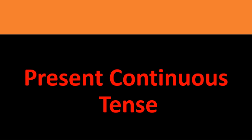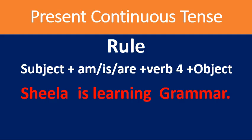Now I take you to present continuous tense. The present continuous tense is used for an action which is happening at present, right now. The rule is: subject + am/is/are (depending on the subject) + fourth form of verb (verb + ing) + object. For example: 'I am,' 'he is,' 'Raju is,' 'Raju and Krishna are.'